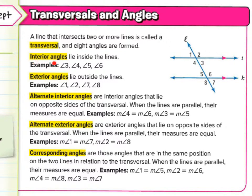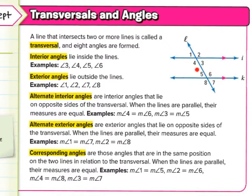Interior angles are the angles between the two parallel lines. Exterior angles are the angles outside the lines. So interior angles lie inside the lines — for example, angles three, four, five, and six. They're right inside the two parallel lines, so these are interior angles.